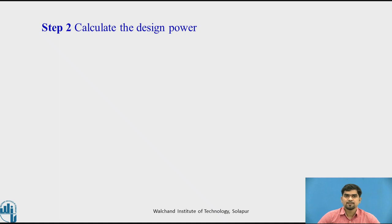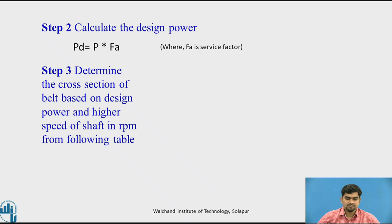Step 2: Calculate the design power using the equation PD = P × FA, where FA is the service factor. Step 3: Determine the cross-section of the belt based on the design power and the higher speed of the shaft in RPM from the following table.